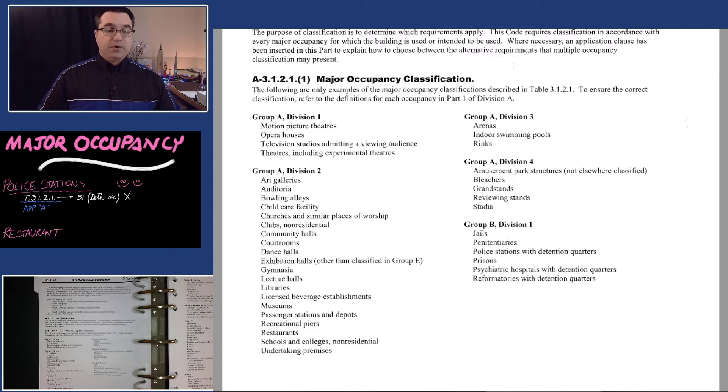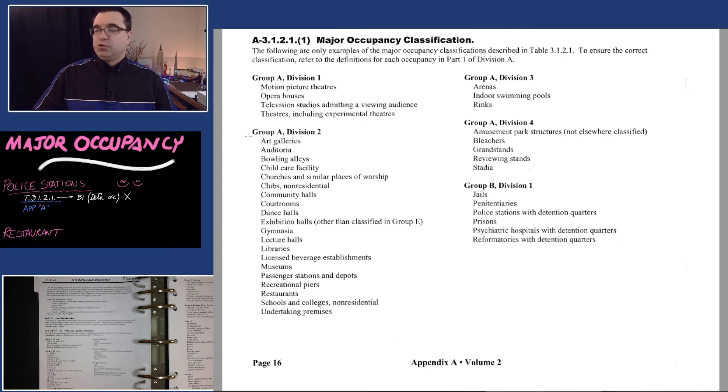We're going to look through all these occupancies for police stations. Depending on what screen you're looking at, this text may not be super clear, so I'm going to bring up these pages in a separate window. You can see I've scanned and highlighted the occupancies. We're going to go through all of these occupancies. You start from A1 and read everything until you get to F3. Everything. Read the whole thing. Let's see where police stations appears. Division A1, I don't see police stations. A2, nothing there.